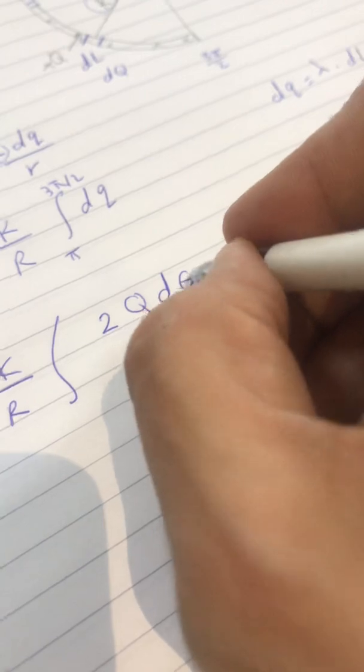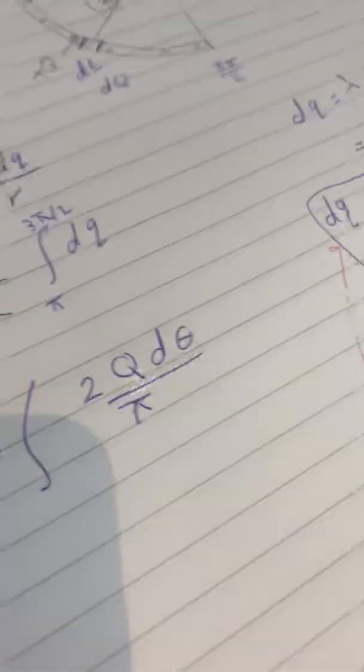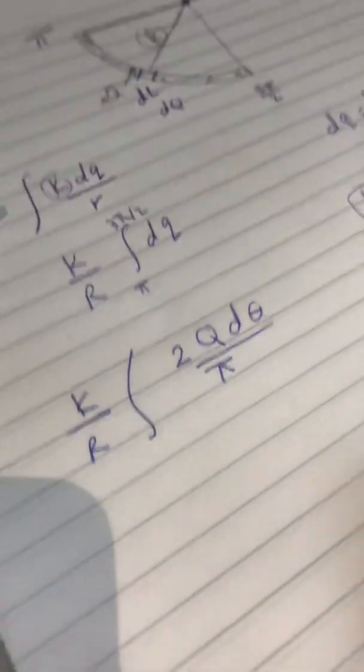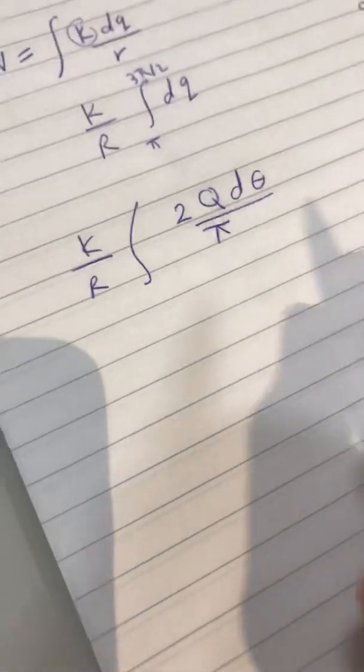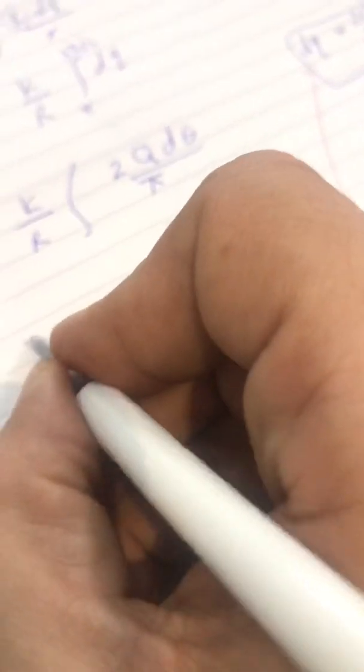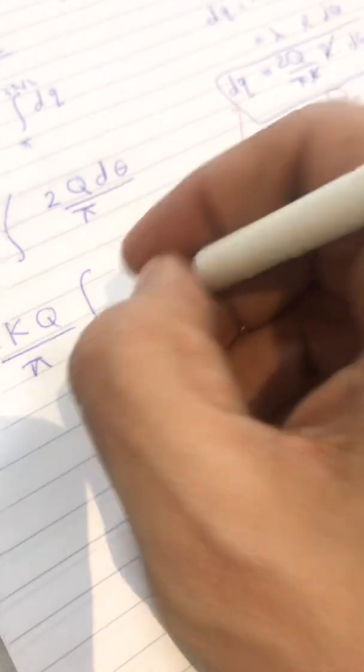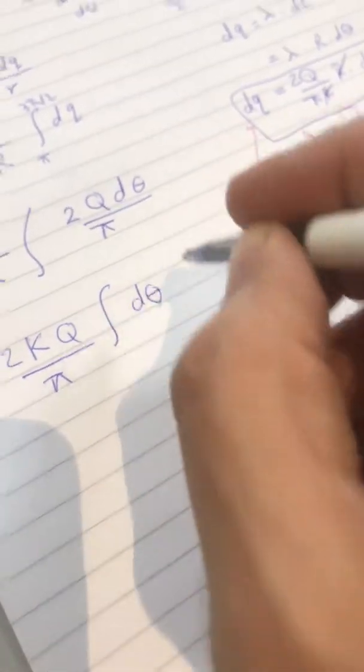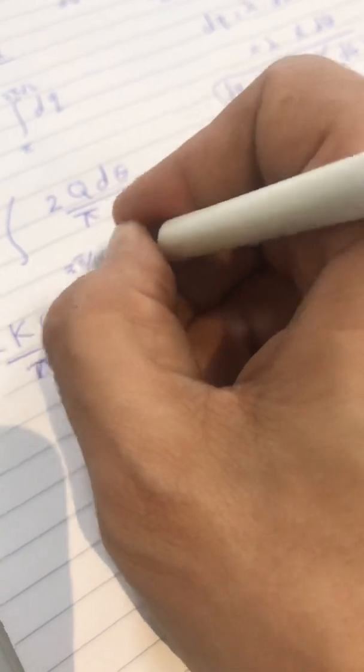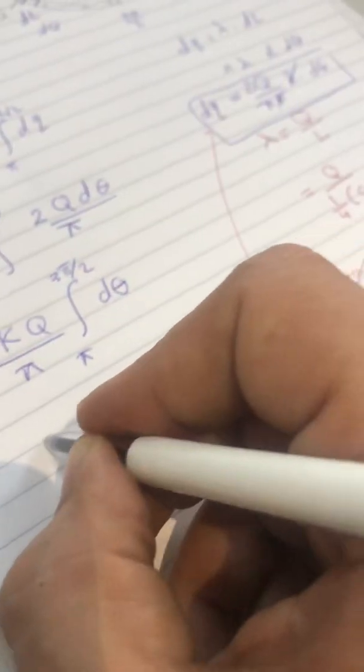2 Q D Theta over Pi. If you notice, everything is constant. So, we'll pull them out, away from the integral. So, we have 2 K Q over Pi R, integration D Theta from Pi to 3 Pi over 2.